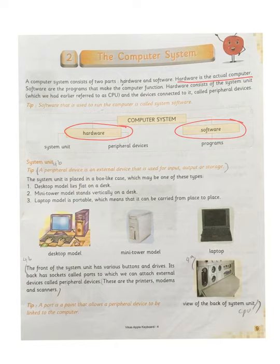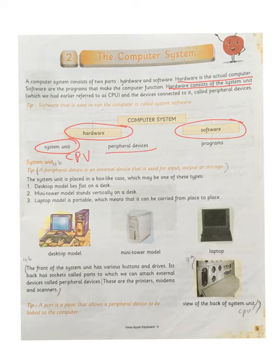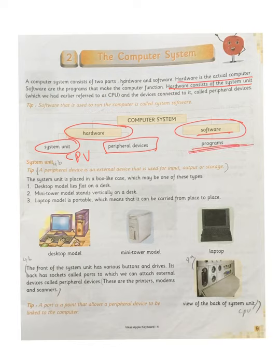Hardware is the actual part and software is the imaginary part that runs on the hardware. Hardware includes the system unit — the CPU — and peripheral devices like mouse, keyboard, pen drive, scanner, and printer. They are called peripheral devices because they are externally connected to the computer. Software includes programs like Paint, Wordpad, and Notepad, which we used for drawing and typing.